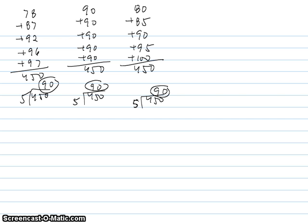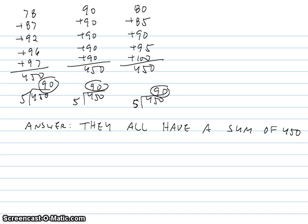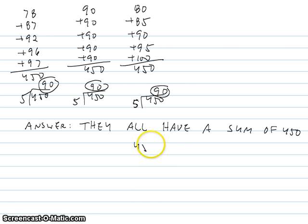Here's a question to think about: aside from having an average of 90, what do these three sets of numbers have in common? One key observation is that not only do they all have an average of 90, but they all have a sum of 450.